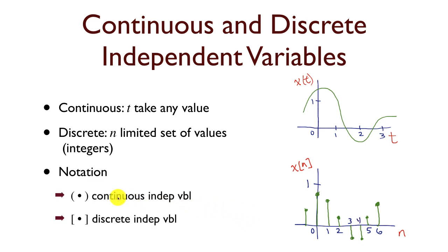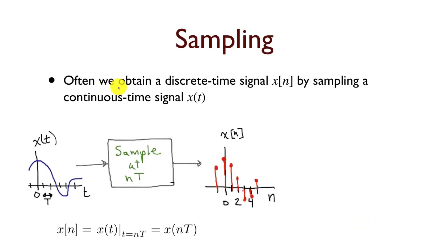Now for notation, when we write down a continuous independent variable signal, we'll use parentheses around the independent variable. So we've written x(t). On the other hand, if we have a discrete valued independent variable, we'll use square brackets, x[n]. And we'll depict a continuous valued independent variable with a smooth curve, whereas we'll use this stem plot for a discrete valued independent variable. One way to obtain a discrete time signal x[n] is by sampling a continuous time signal x(t).